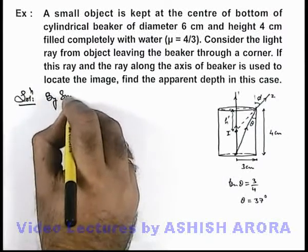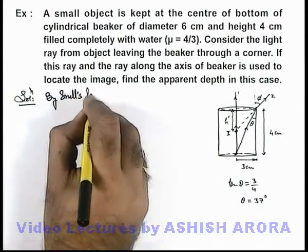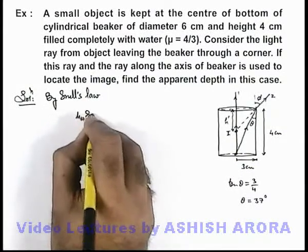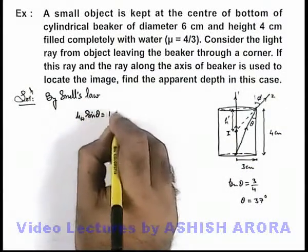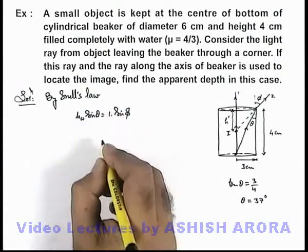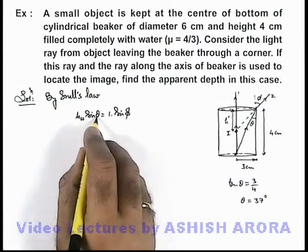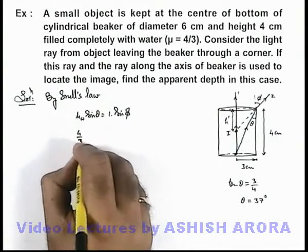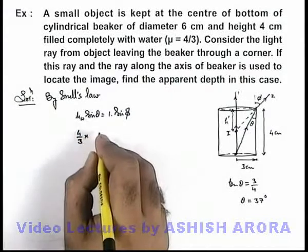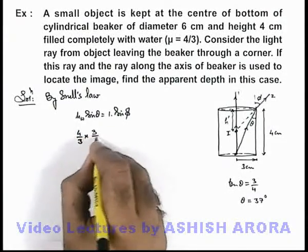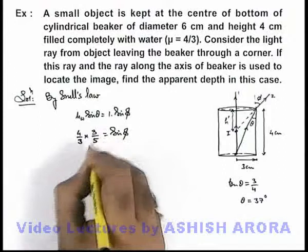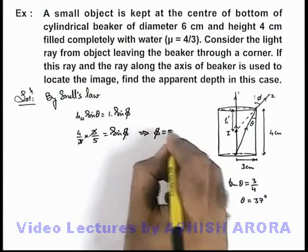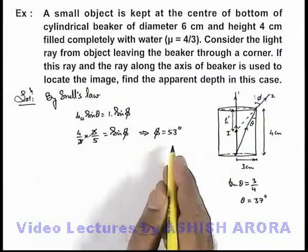Using Snell's law, we can write: mu of water times sine theta equals 1 times sine phi. Substituting the values, mu is 4 by 3 and sine 37 degree is 3 by 5, so we get: (4/3) × (3/5) = sine phi. The value of sine phi comes out to be 4 by 5, which implies the value of phi is 53 degrees, that is sine inverse of 4 by 5.